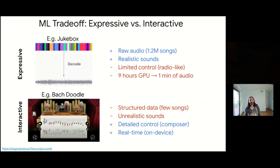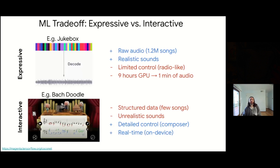There are trade-offs between these different facets. Consider two popular ML models. Jukebox, released by OpenAI, looks in a very black-box way at the raw audio waveform and models that waveform. On the plus side, it's very expressive and realistic with few assumptions. But it requires very large models, tons of data, and takes a very long time to generate audio — like nine hours on a GPU to generate one minute of audio. That's very high latency and very hard to use interactively, with limited controls — it's more like a radio where you push a button and listen to a song.